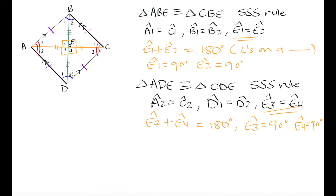We've already determined through these two examples that B1 equals B2 and D1 equals D2. So we have already shown that the green diagonal bisects the interior angles D and B, splitting each into two equal sized parts: B1 equals B2 and D1 equals D2.